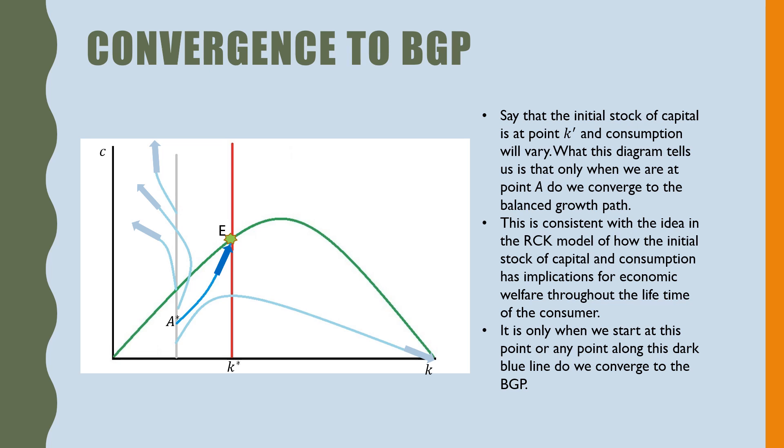This is consistent with the idea in the RCK model of how the initial stock of capital and consumption has implications for economic welfare throughout the lifetime of the consumer. It is only when we are starting at this point or any point along this dark blue line do we converge to the BGP.